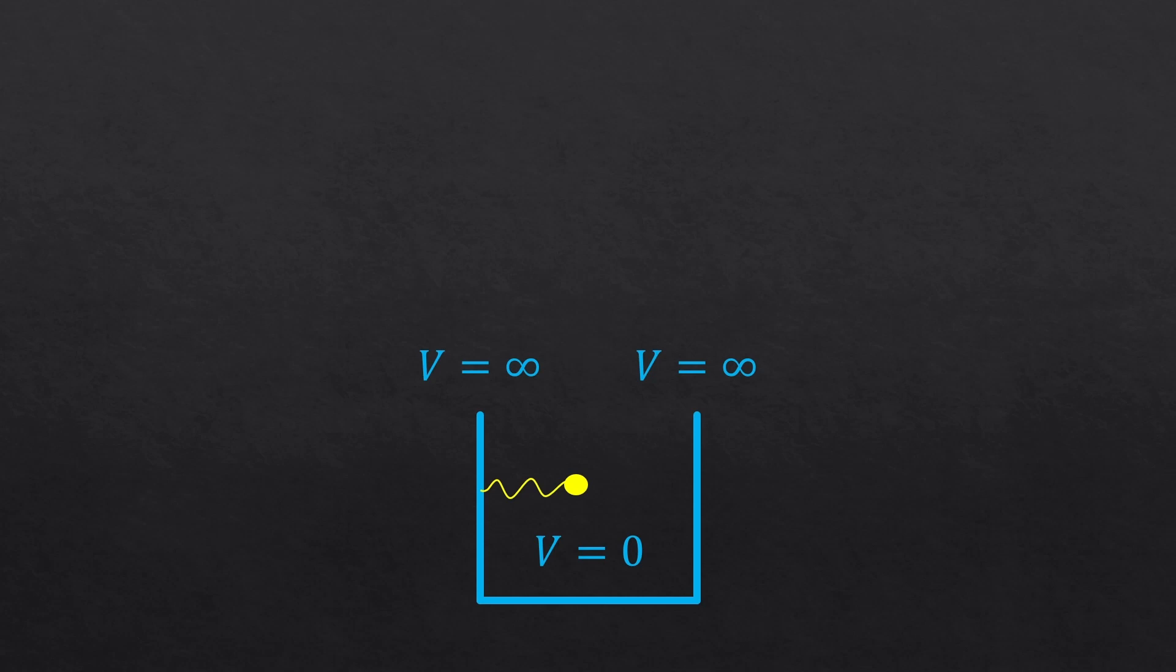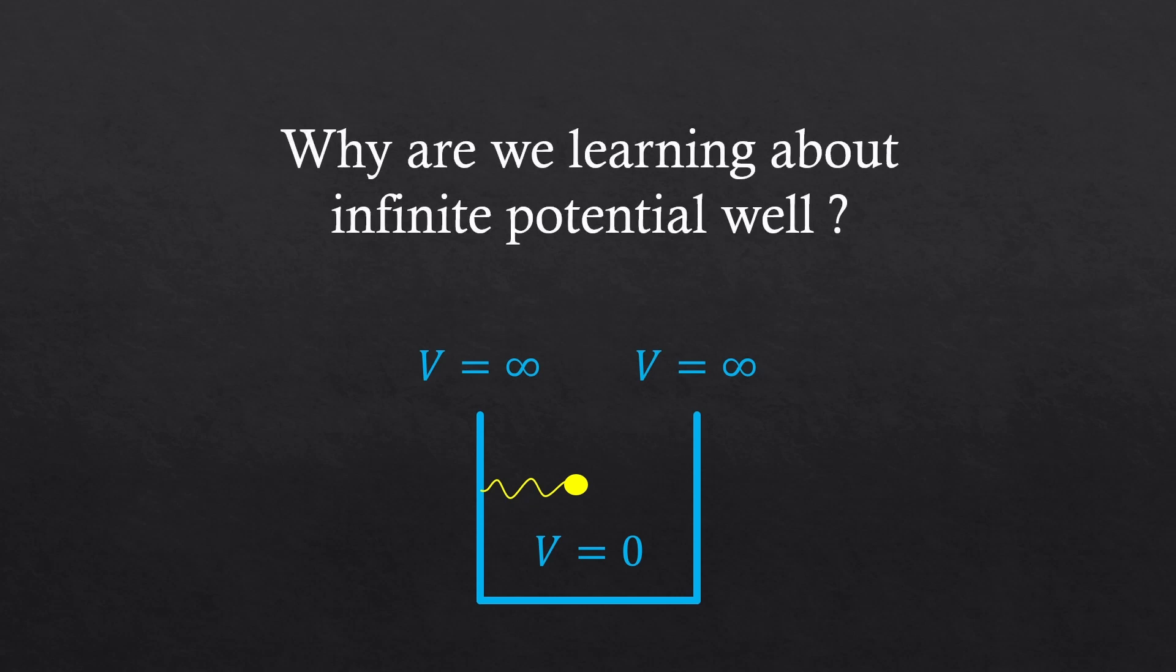So in the beginning, we start learning about this square shape infinite potential well mathematically. This is like creating walls with high amount of voltage such that an electron is trapped in between. But is this some kind of physical wall? Why do you have to learn about this concept in quantum mechanics?